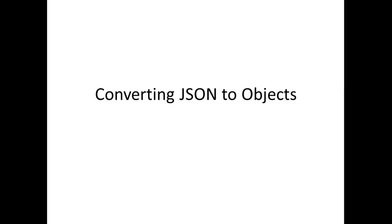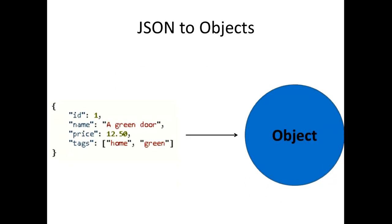Today I'm going to talk about converting JSON to objects. This is a continuation of the last video where I showed you how to convert objects to JSON, but now I'm going to show you the reverse. When converting JSON to objects, you already have your JSON data, and you structure an object based on it so it can pull whatever value you want. We'll be using the Jackson library to do that.